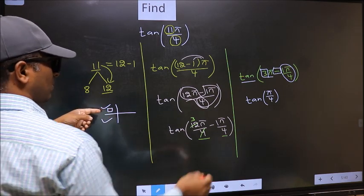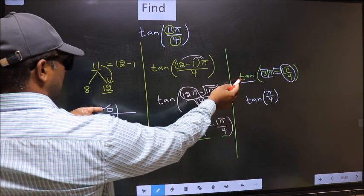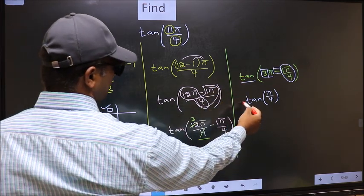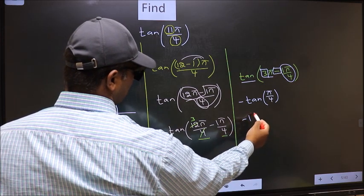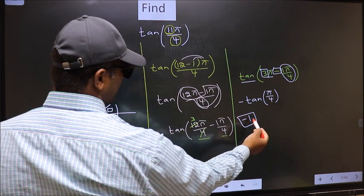That means the angle lies in the second quadrant. And in the second quadrant tan is negative. So we should put negative. So negative tan π by 4 is 1. This is our answer.